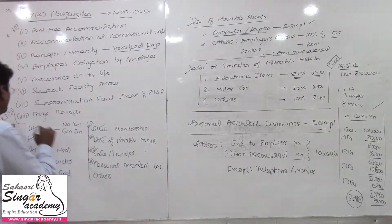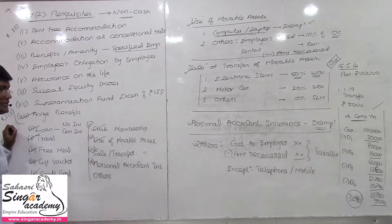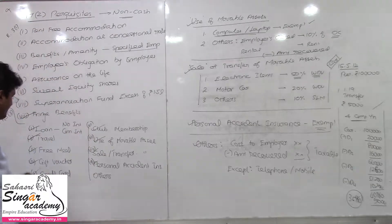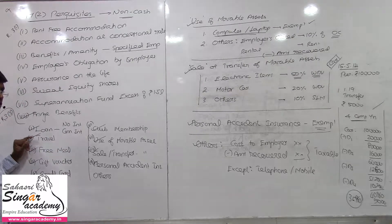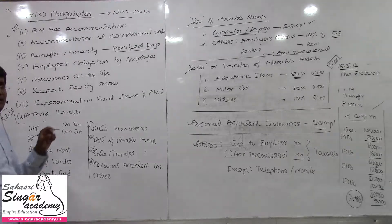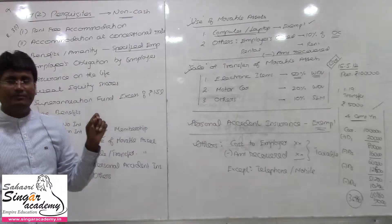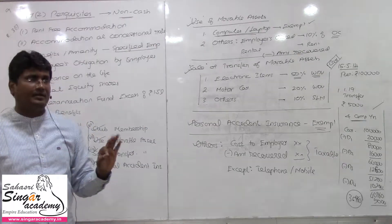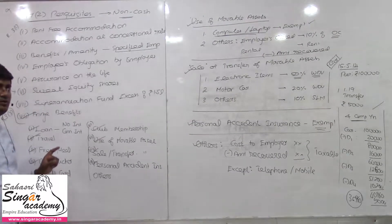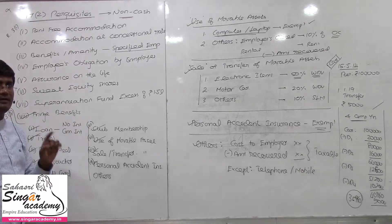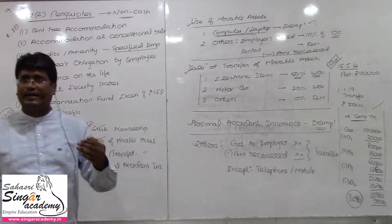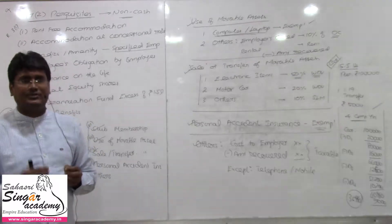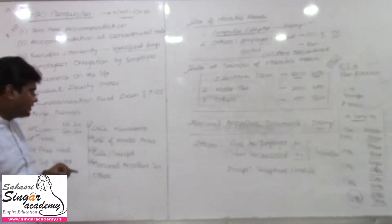You now understand the concept of fringe benefits. Other items include: loan given without interest or at a concessional rate of interest, traveling, touring, accommodation, free meal provided during working hours — ₹50 per meal in remote places is fully exempted, and non-alcoholic beverages are fully exempted. For gifts or vouchers, up to ₹5,000 is exempted; if cash-convertible, fully taxable. For credit cards, the service charges and annual maintenance charges to the extent used for personal purposes are considered as perquisites value.